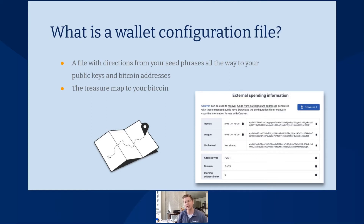You could take this wallet configuration file, take it to another Bitcoin multi-signature wallet application, and completely rebuild your multi-signature vault. There's a screenshot in the bottom right showing what the wallet configuration file contents look like at a high level as shown in your Unchained vault interface. Really, this file is just a file with directions that a wallet software can read.